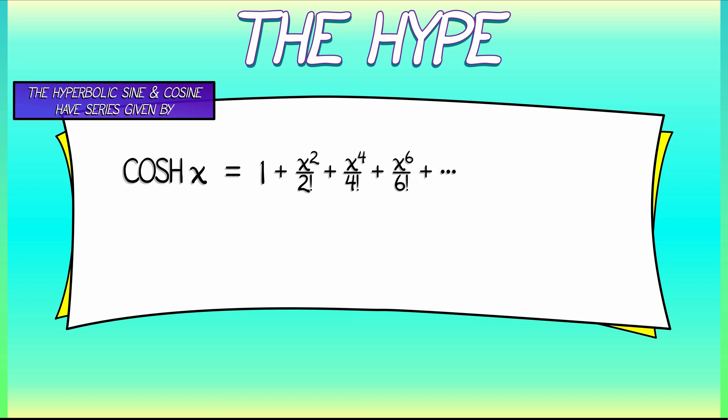If you write that out in summation notation, it's the sum k goes from 0 to infinity x to the 2k over quantity 2k factorial.